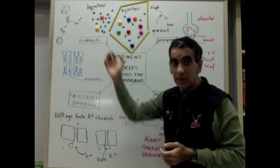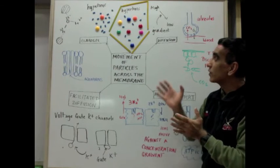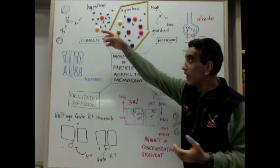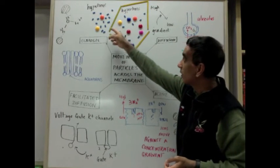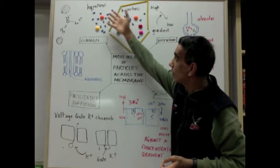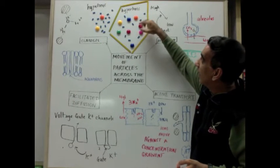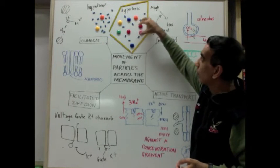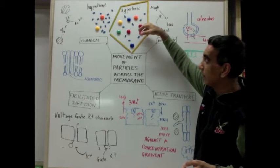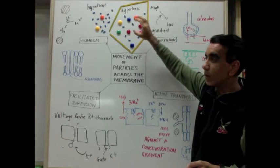Osmosis is a special kind of diffusion involving the movement of the solvent, which inevitably in a cell is water, and here you can see a hypotonic solution or a weak solution or a dilute solution on the outside of a cell, and a hypertonic solution or a strong solution on the inside.